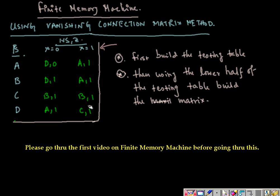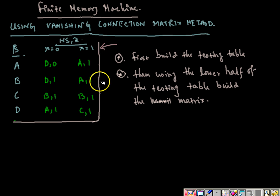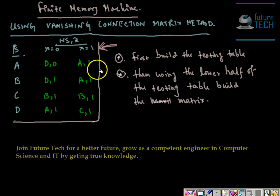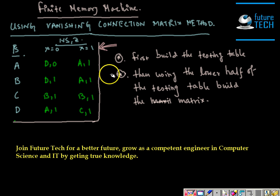If you do not know what a finite memory machine is, or what testing graphs and testing tables are, you can check out the last video for all those things. You should know what a testing table is before proceeding with this video. So if you do not know these things, please go to the last video first, then come to this video. This is the given finite state machine and we need to check whether it is a finite memory machine or not.